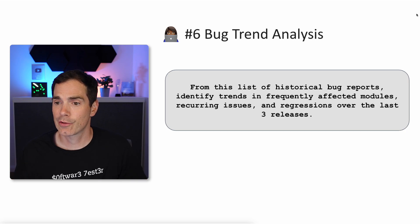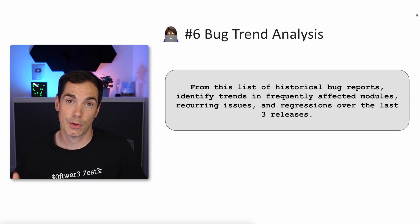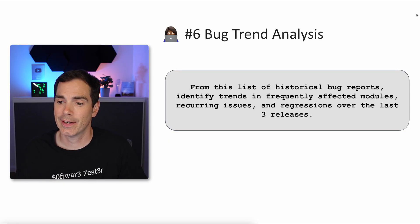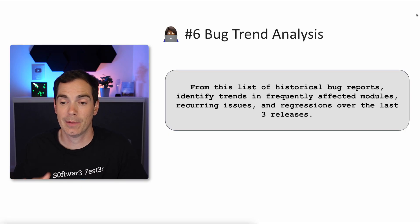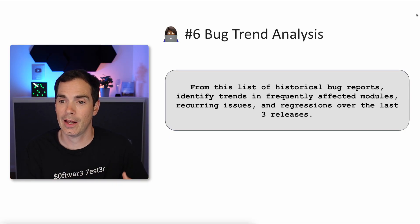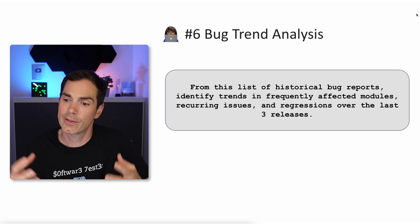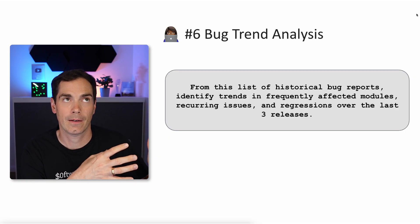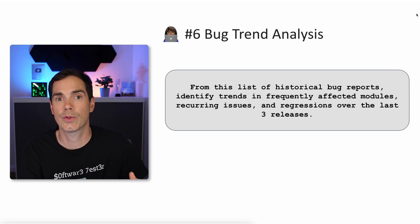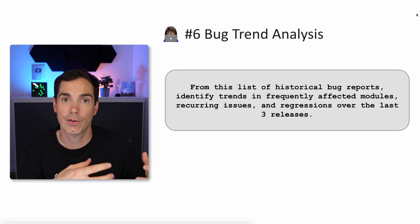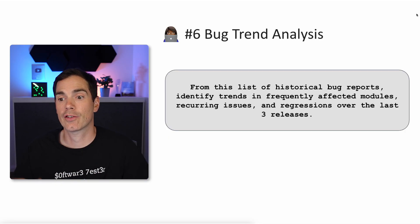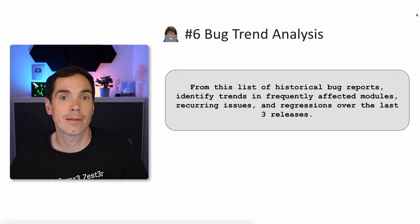Prompt six: bug trend analysis. From this list of historical bug reports, identify trends in frequently affected modules, recurring issues, and regressions over the last three releases. For example, imagine you have a test monitoring dashboard and KPI systems in your company — you give the LLM all your historical bug data from past releases and production issues. You can also give the LLM the code changes affecting your product and then ask it to provide a trend analysis on future releases.